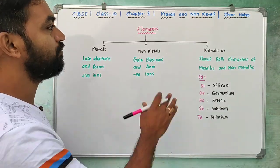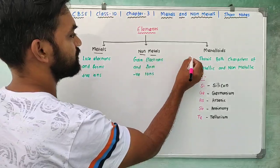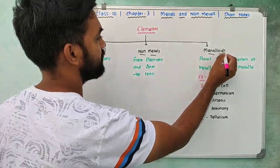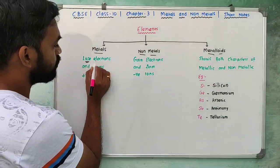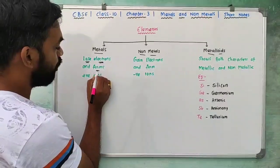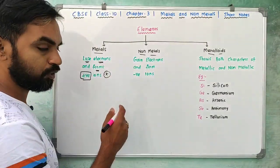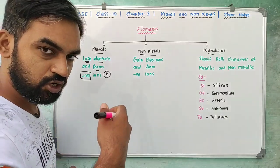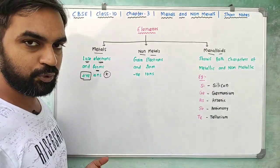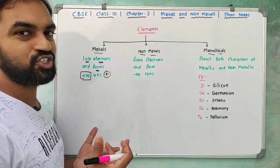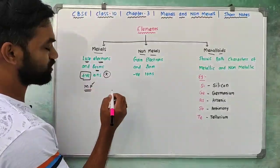Let's classify metals and non-metals. The elements are metals, non-metals, and metalloids. Metals lose electrons and form positive ions. This is very important — metals release electrons and form positive ions. Since the negative electron is lost, the ion will be positive. So metals are positive.